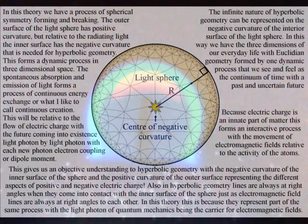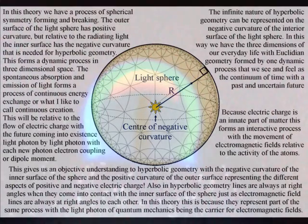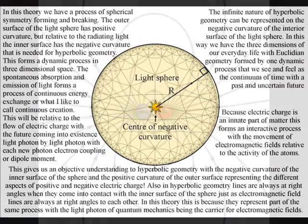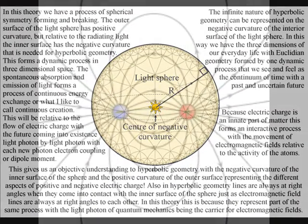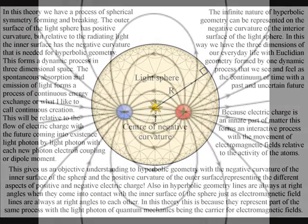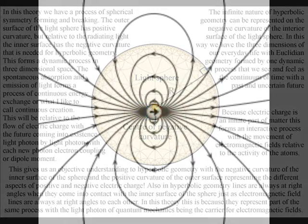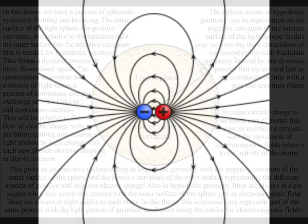In this way, we have the three dimensions of everyday life with Euclidean geometry within three-dimensional space formed by one dynamic process that is based on hyperbolic geometry. The spontaneous absorption and emission of light forms a process of continuous energy exchange, or what I like to call continuous creation.